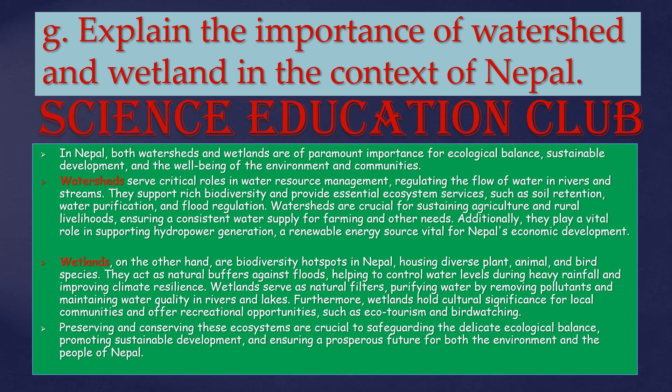Wetlands, on the other hand, are biodiversity hotspots in Nepal, housing diverse plants, animals, and bird species. They act as natural buffers against floods, helping to control water levels during heavy rainfall and improving climate resilience. Wetlands serve as natural filters, purifying water by removing pollutants and maintaining water quality in rivers and lakes.